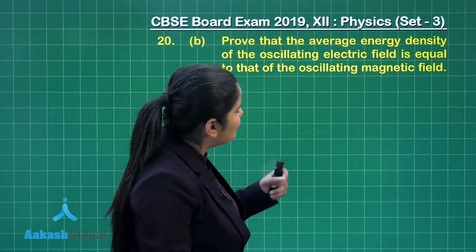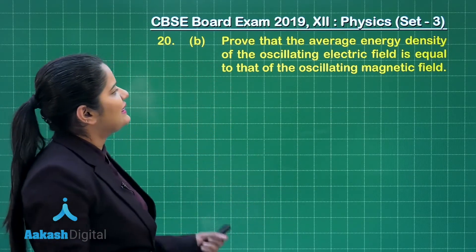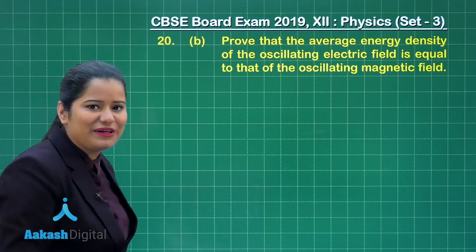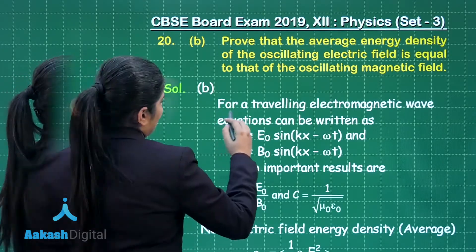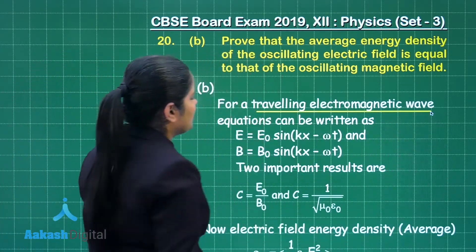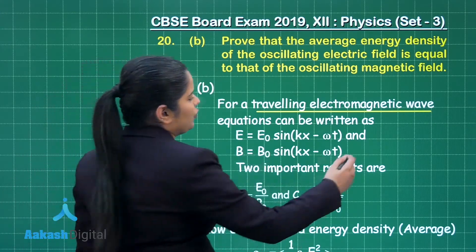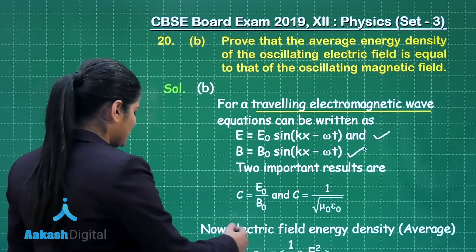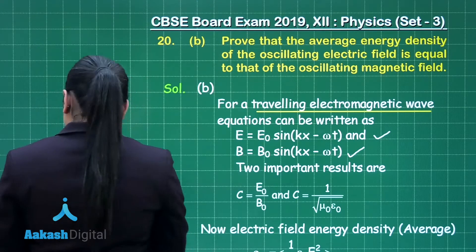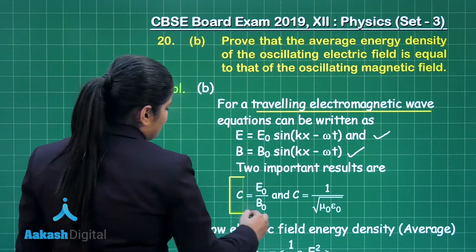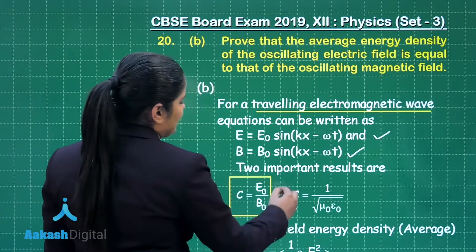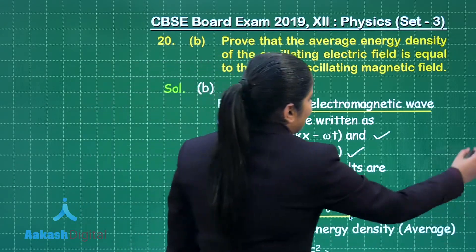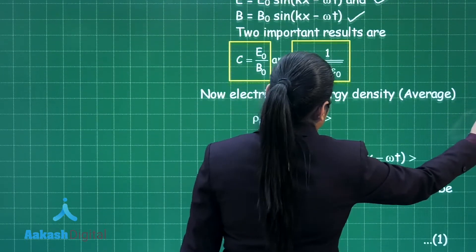The next part holds two marks and asks us to prove that the average energy density of the oscillating electric field is equal to that of the oscillating magnetic field. For a traveling electromagnetic wave, we can write the equations for the electric and magnetic fields as time-dependent functions. We also have two important results: c equals E-naught by B-naught, and c equals 1 over the square root of mu-naught epsilon-naught.